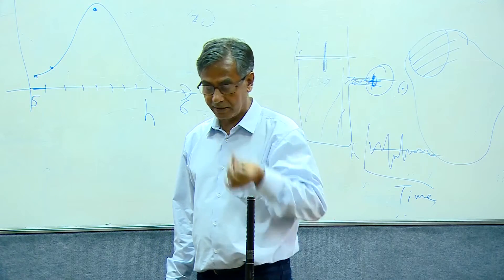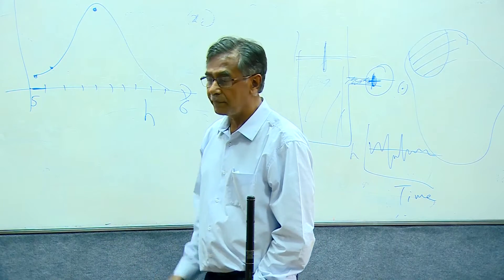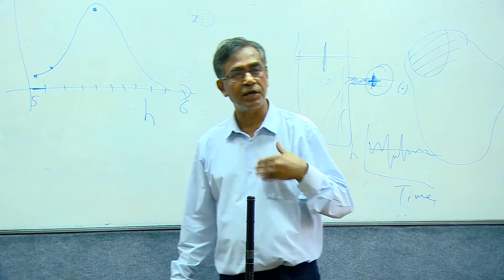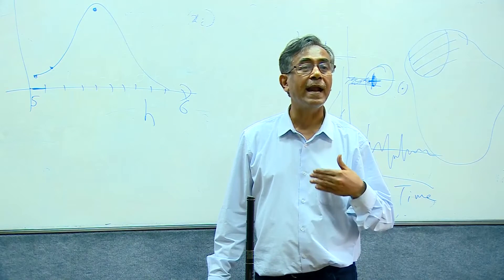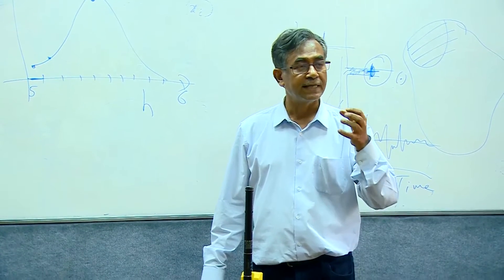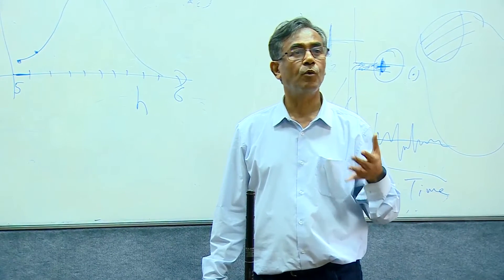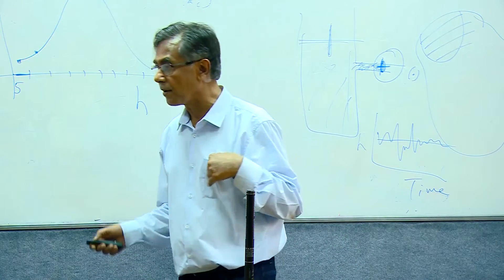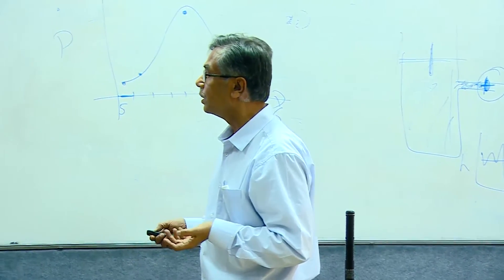Next class, we will define phase space, define trajectories, and then be in a position to introduce the postulates of statistical mechanics. When we introduce the postulates, there are very interesting things where we continuously overlap with classical mechanics. You can do the same in quantum mechanics, but we will keep it simple in classical mechanics — talking in terms of position, momentum, atoms, and molecules. Today's lecture is essentially to tell you that statistical mechanics is probabilistic and stochastic, involving Gaussian distributions, averages, and standard deviations.